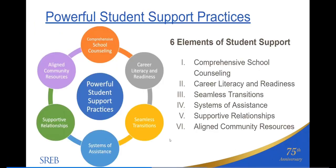The Powerful Student Support Practices document includes six key elements of student support. One: comprehensive school counseling — each student participates in a comprehensive counseling program that addresses academic and career development and mental health and wellness to attain skills for lifetime success. Two: career literacy and readiness — each student engages in ongoing career awareness and exploration to become career literate and develops a personalized plan for future success. Three: seamless transitions — each student receives appropriate support for a seamless transition between teachers, grade levels, and or schools.